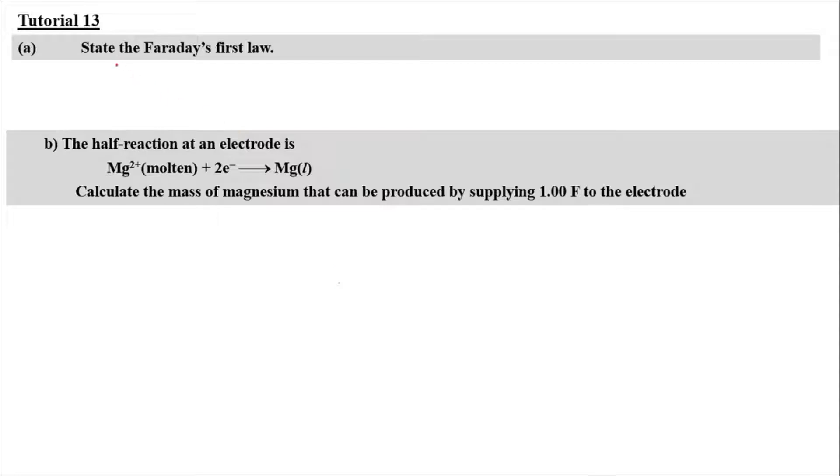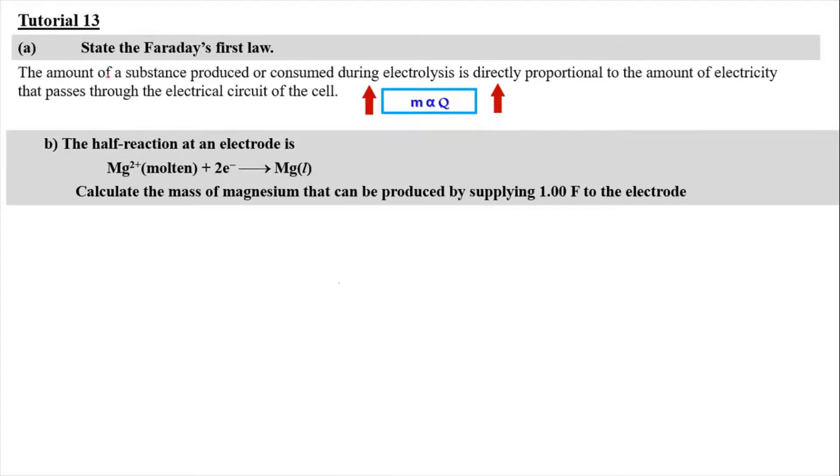So for tutorial question 13, we have to state the Faraday's first law. So when talking about Faraday's, we will be imagining the mass with relationship with the electric charge in Coulomb. So the relationship is directly proportional, which means that when the electric charge increases, the mass of the substance increases. But when the question asks for definition, we have to write it in terms of the full sentences. We can say that the Faraday's first law says that the amount of the substance produced or consumed during electrolysis is directly proportional to the amount of electricity that passes through the electrical circuit of the cell. So this is the full sentence.